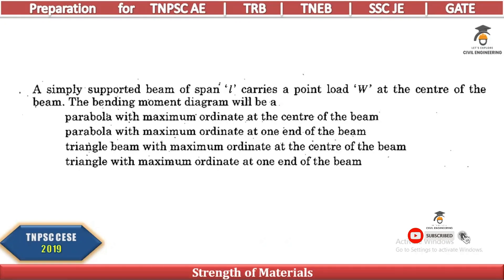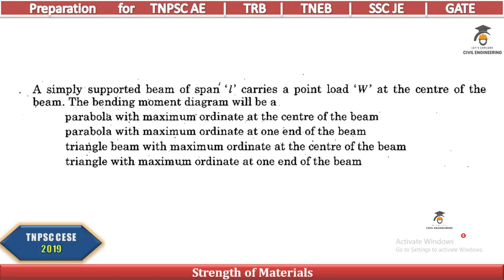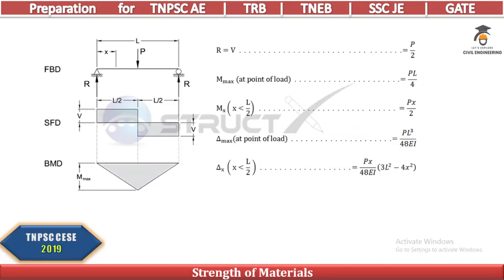A simply supported beam of span L carries a point load W at the center. The bending moment diagram will be triangular — a point load produces a straight-line (triangular) BMD with maximum bending moment at the center of the beam.